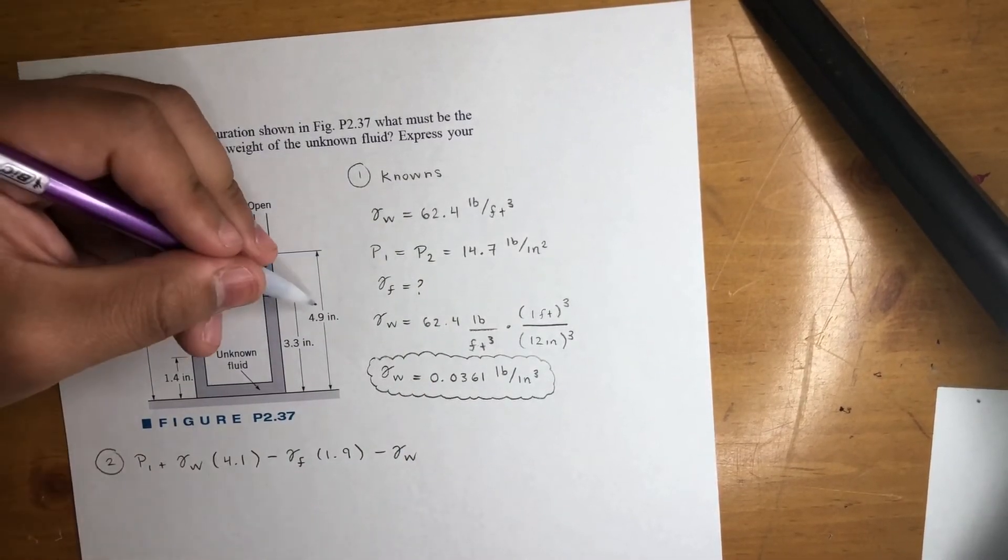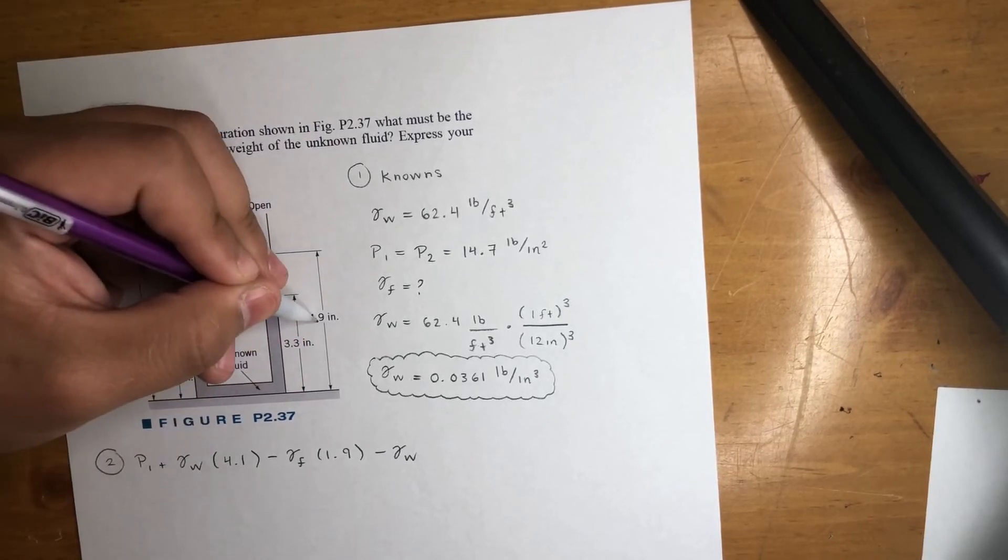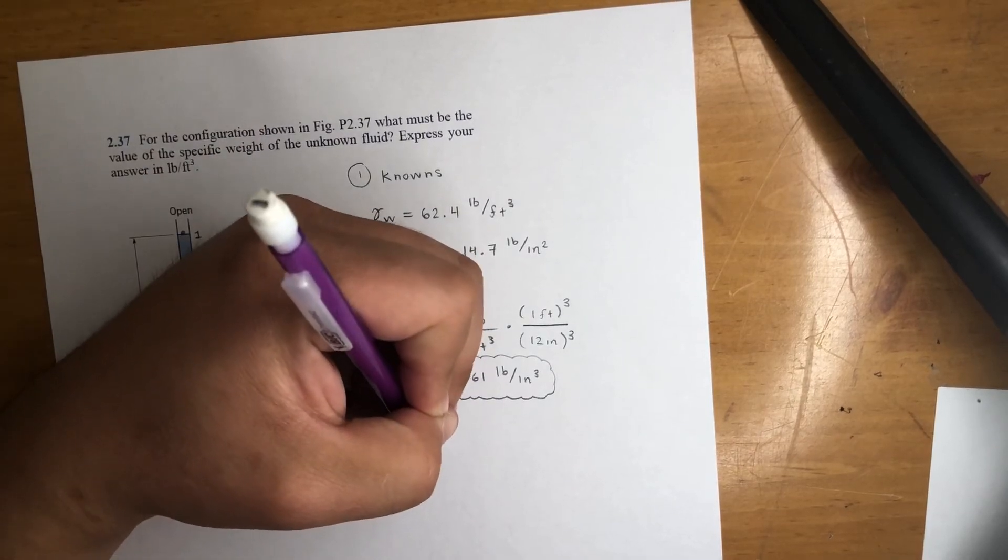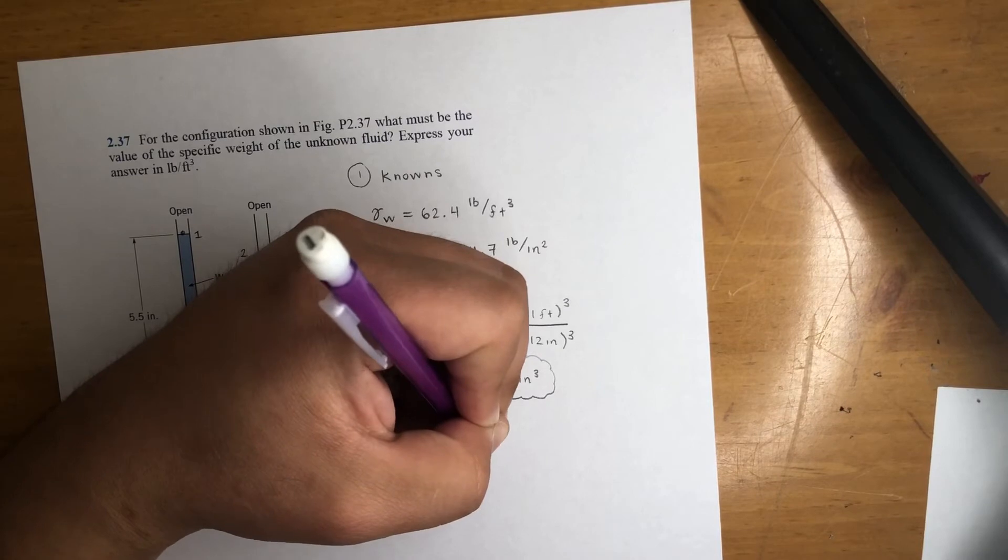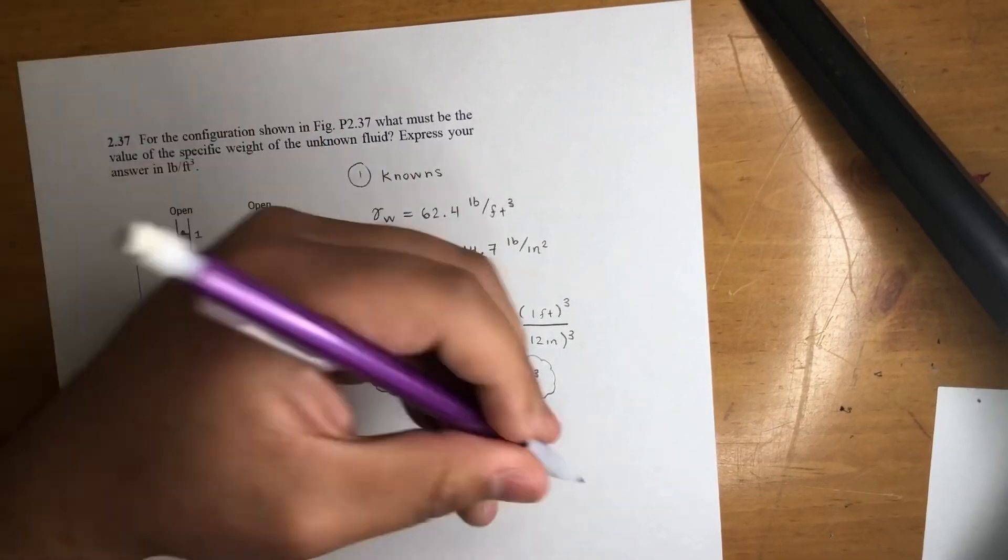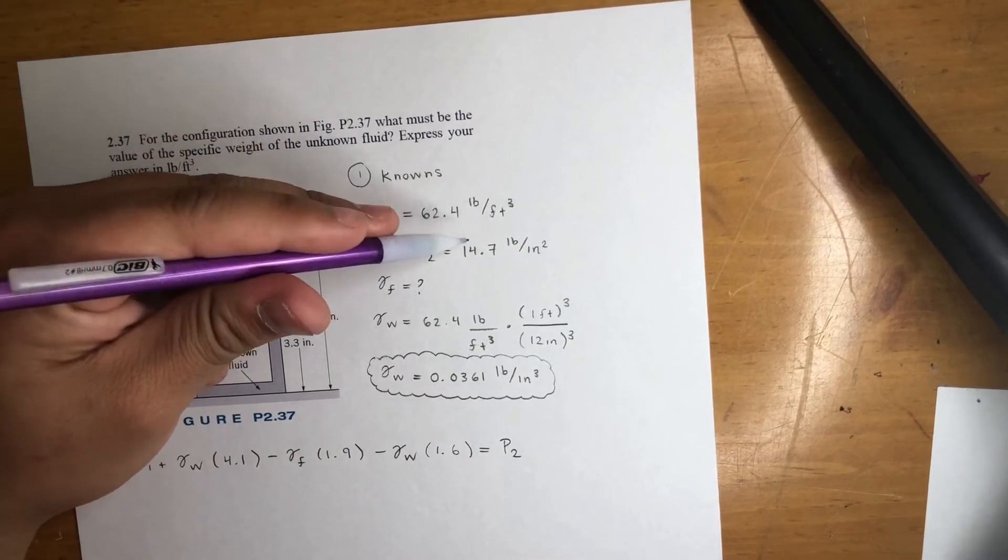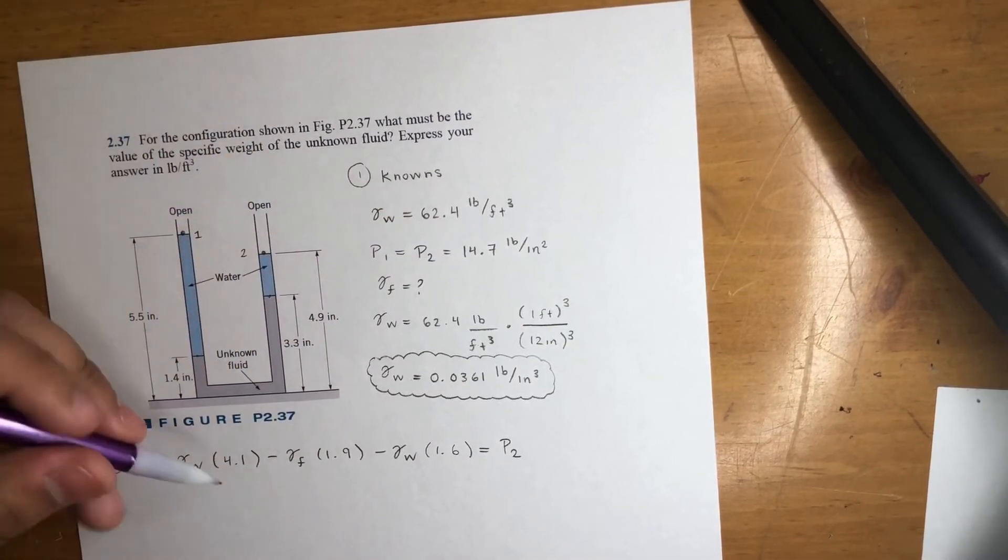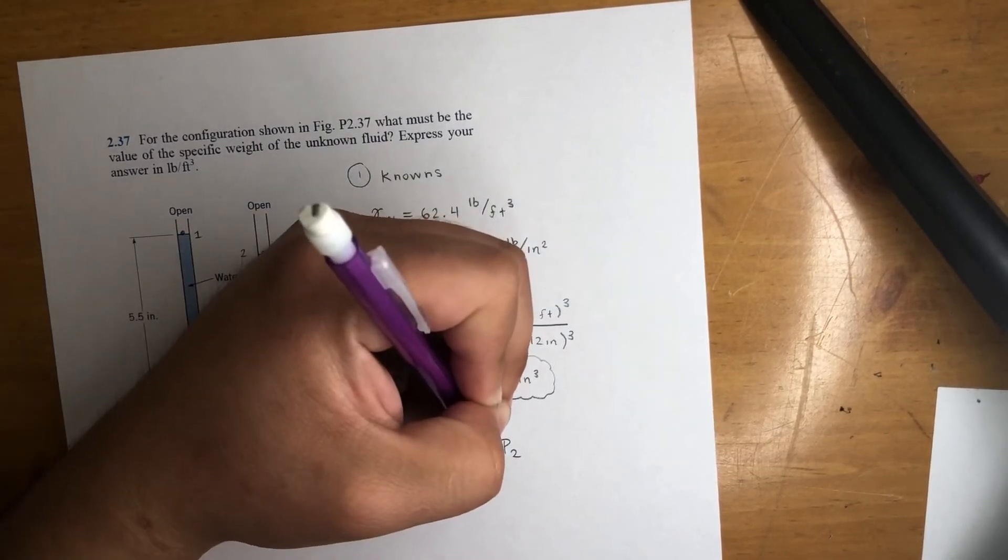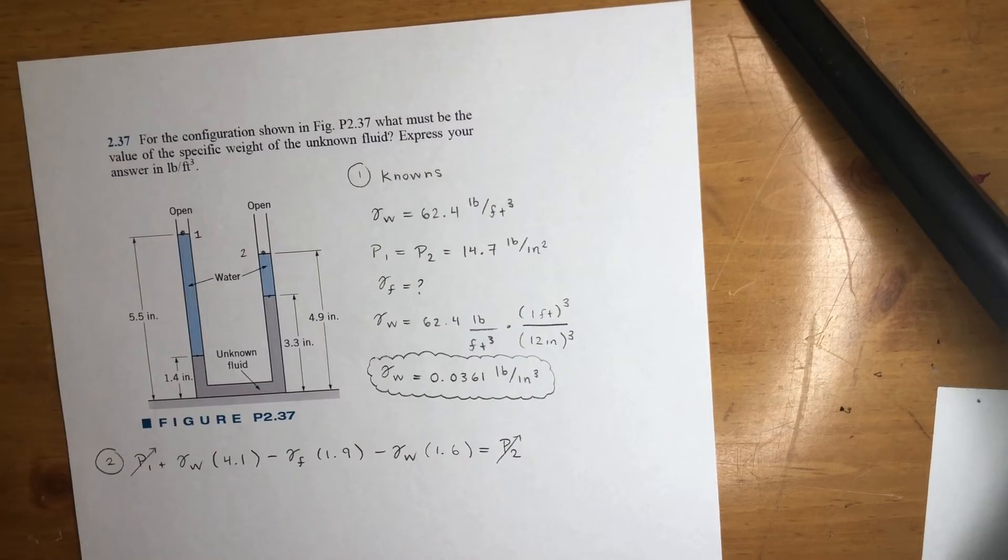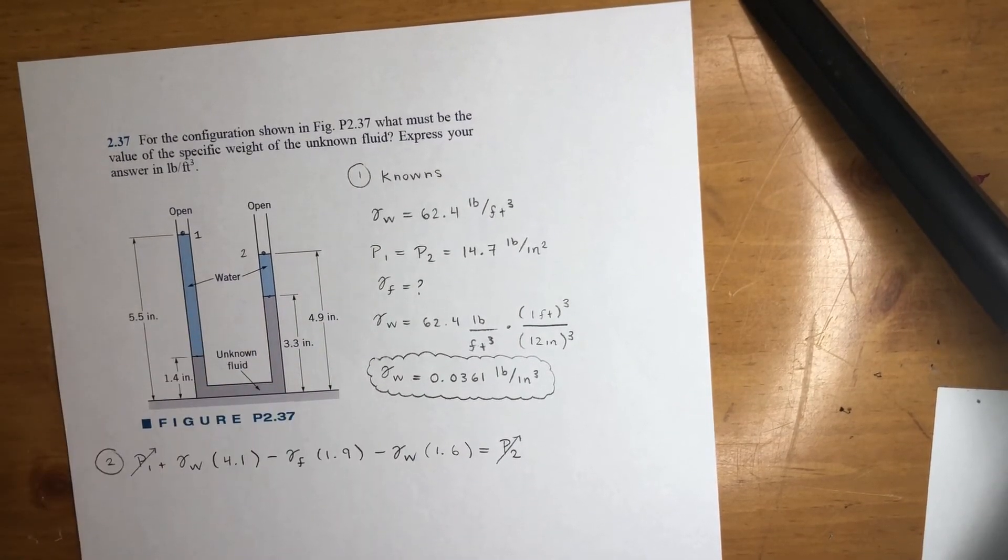Water times the height, 4.9. All of this minus all of this, so 4.9 minus 3.3, that is 1.6. And we set it equal to p2. Now look, p1 is equal to p2. That's why I said it didn't matter if you use gauge or absolute. So p1 cancels out with p2. So cool, now you're just left with these three numbers equal to zero.